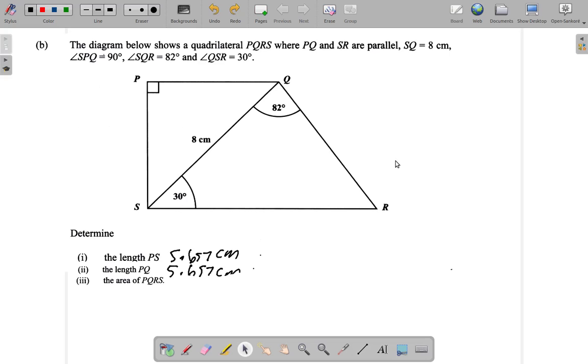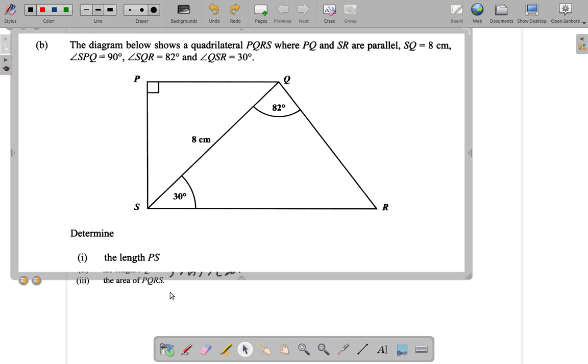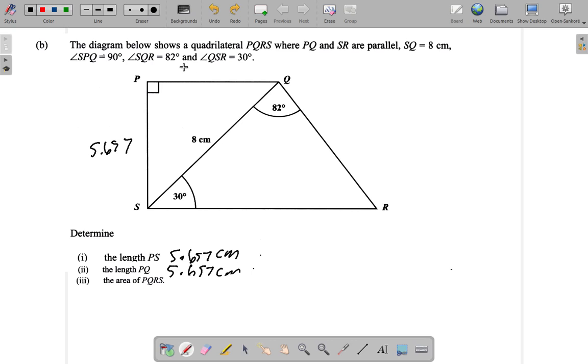Okay, let's look at part B3 now. Earlier we found out that PS was 5.657 cm and PQ is 5.657 cm as well. They were on the area of PQRS, that's the entire quadrilateral, which is a trapezium here. Now let's consider the entire figure. Let's do our recreation of it.